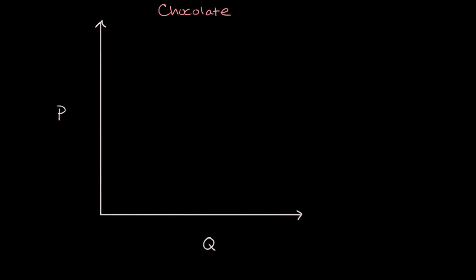What we're going to do in this video is think about the market for chocolate, and we're gonna think about supply and demand curves, but we're gonna get an intuition for them in a slightly different way. In particular for the demand curve, we will think about the idea of marginal benefit.